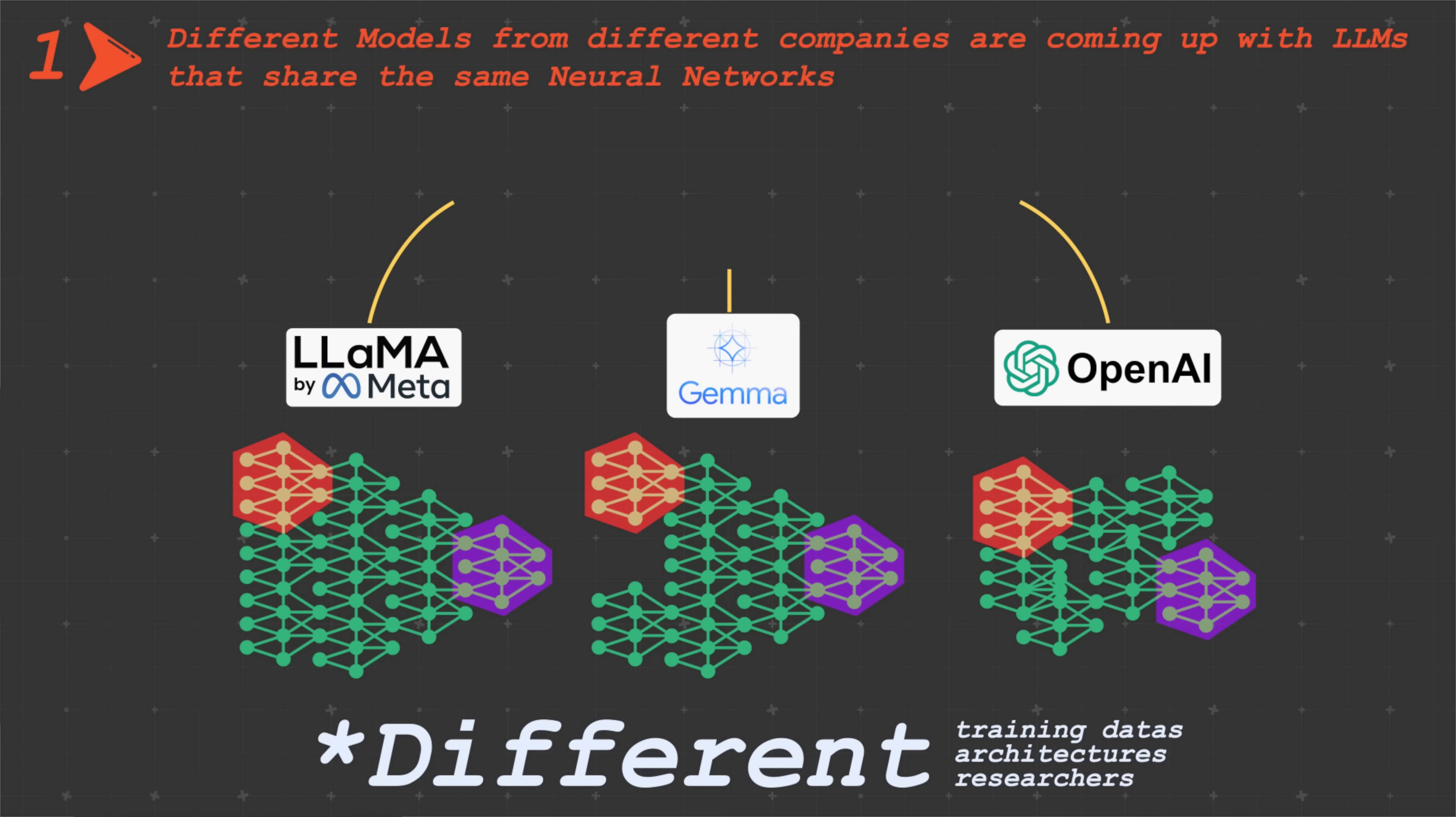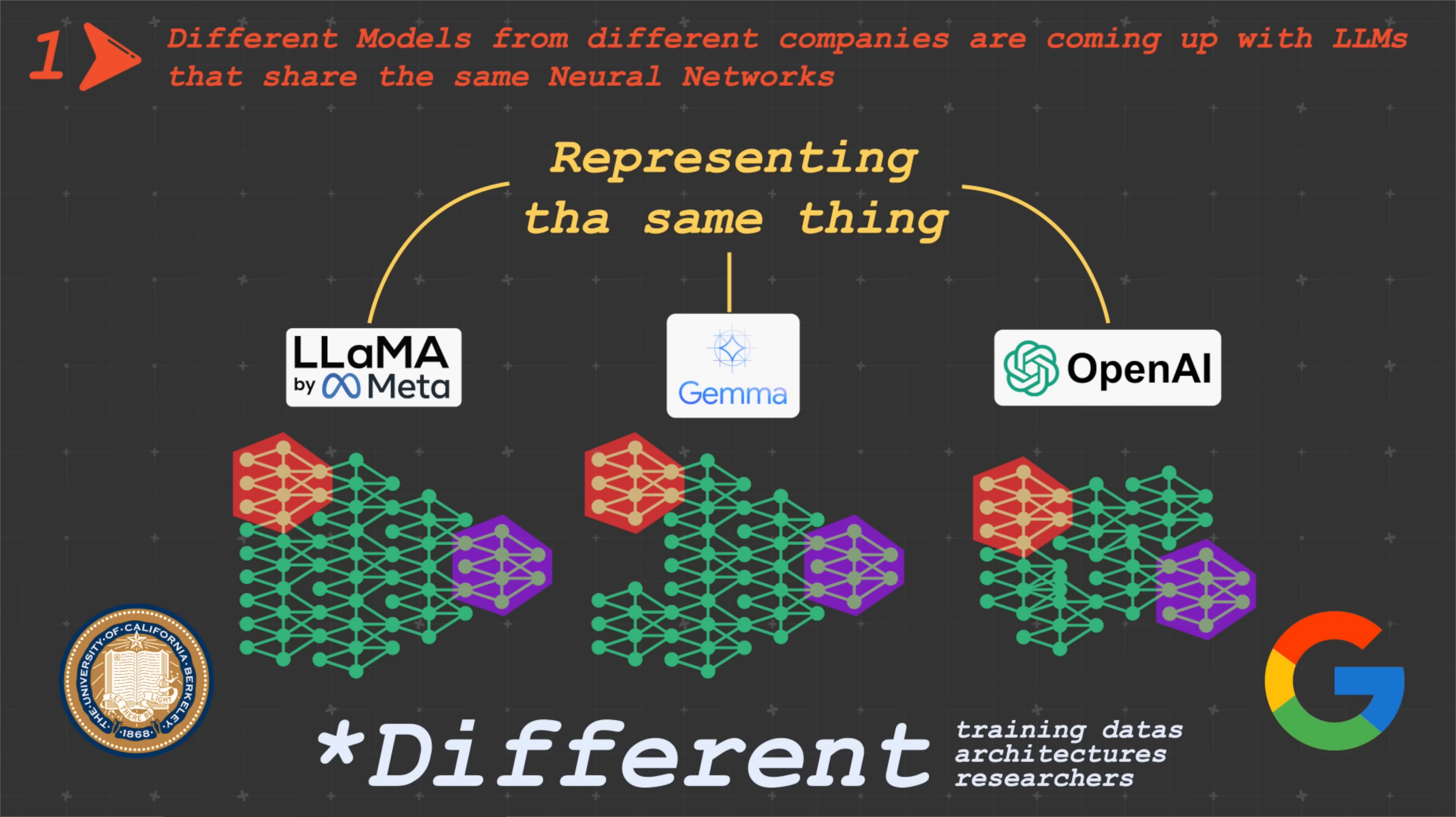Why is this the case? It could be that they are all representing the same thing. At a high level when you train these models, you all see the same reality. This was discovered by UC Berkeley and Google in 2023. It's an interesting piece, but it's not sufficient. It's just a starting point.